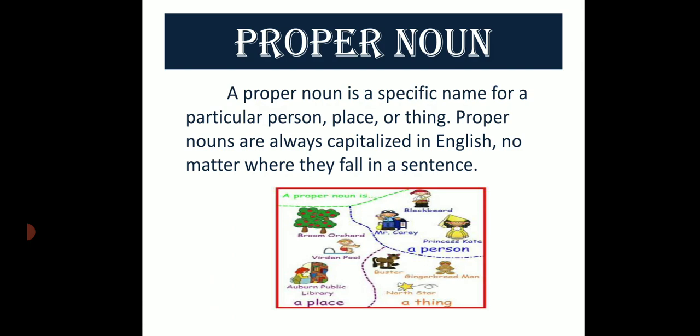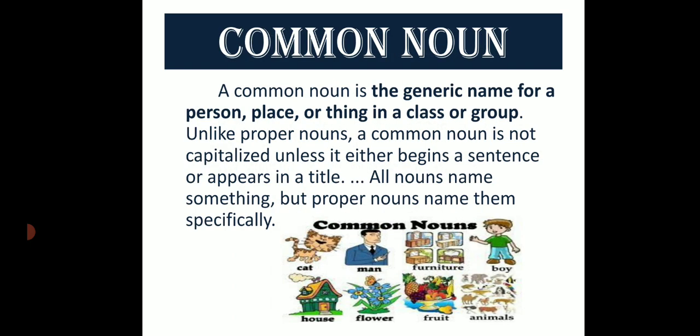Vyakti vachak sangya mein chahe wo shabd shuru mein ho, beech mein ho ya ant mein, us shabd ka pehla akshar capital hota hai. Yeh bahut important baat hai ki proper nouns are always capitalized in English, no matter where they are. For example, persons: Princess, Blackbeard, Mr. Darby; things: Buster, Ginger, Red Man, North Star; places: Broom Orchard, Riddenpool, Everston, Public Library.